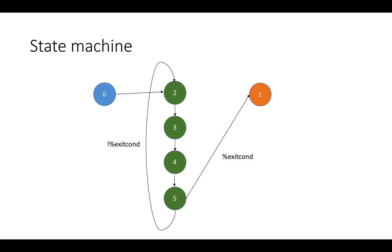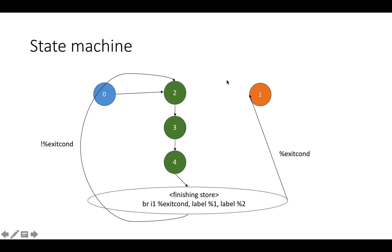In this video we're really going to get into the essence of what pipelining is. In this state machine there's an entry state, then a state where we start loading a value from memory, then in state three we finish loading and add seven to it and start storing, then the store continues in state four because it doesn't finish until two cycles later. In state five we finish the store and branch either back to the start of the loop or to the end of the program.